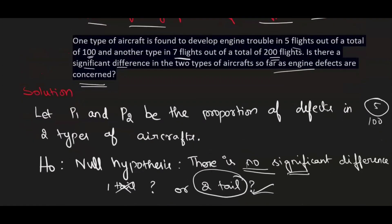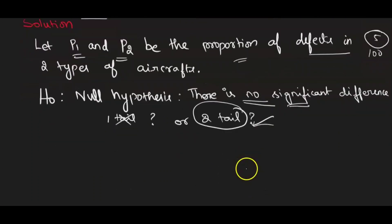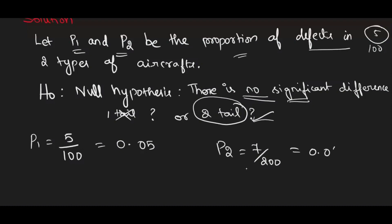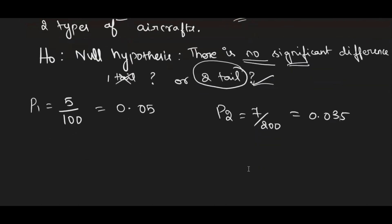Let p1 and p2 be the proportions of defects in the two types of aircraft. For the first type: p1 = 5/100 = 0.05. For the second type: p2 = 7/200 = 0.035. We have n1 = 100 and n2 = 200.